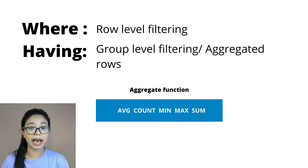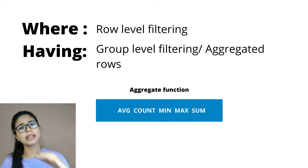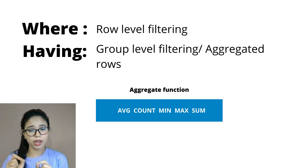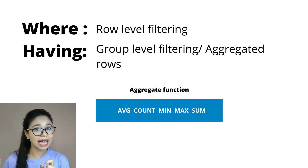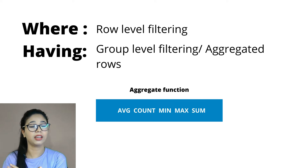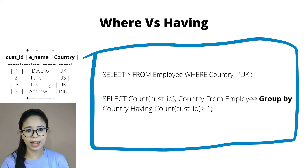HAVING, on the other hand, is used for group-level filtering. Whenever you are using aggregation — like average, count, minimum, or maximum — for example, if you want departments with an average salary greater than a certain value, you use HAVING. Whenever a column name comes with an aggregating function, you need to apply HAVING instead of WHERE. WHERE cannot be used with aggregated functions — make a note of it.